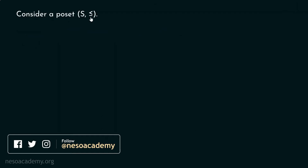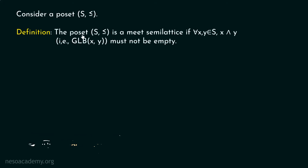Consider this poset S, less than or equal to. Our target is to define what a Meet Semilattice is. The poset S, less than or equal to, is a Meet Semilattice if for all x, y belonging to S, x meet y — that means the greatest lower bound of x, y — must not be empty.